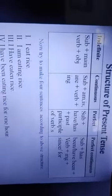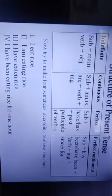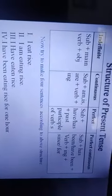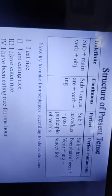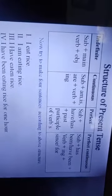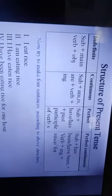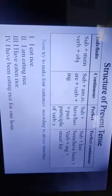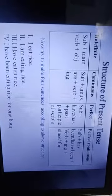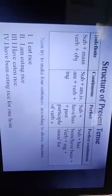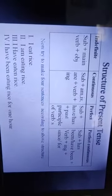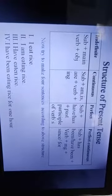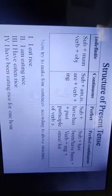Examples: Present indefinite — 'I eat rice.' Present continuous — 'I am eating rice' (Subject + am + eat + ing + object). Present perfect — 'I have eaten rice' (Subject + have/has + V3). Present perfect continuous — 'I have been eating rice for an hour.'